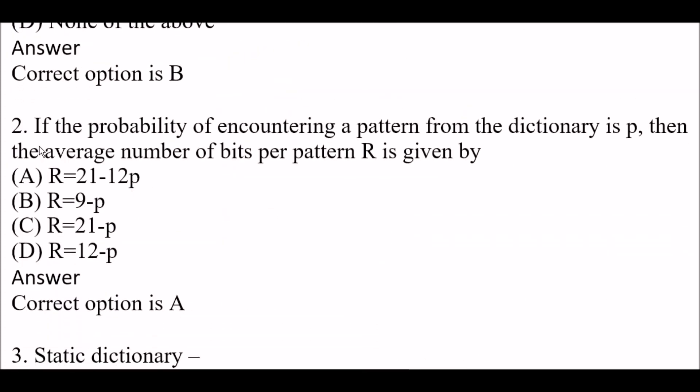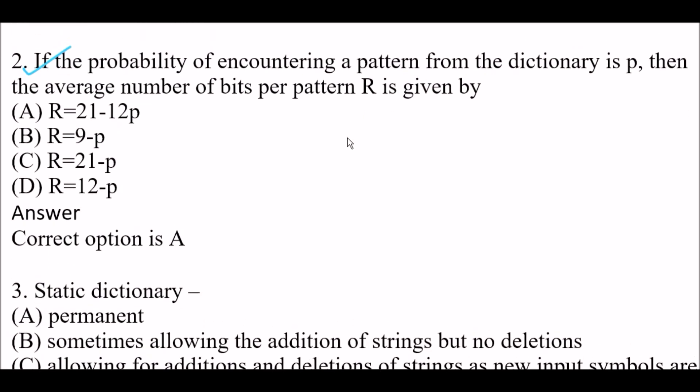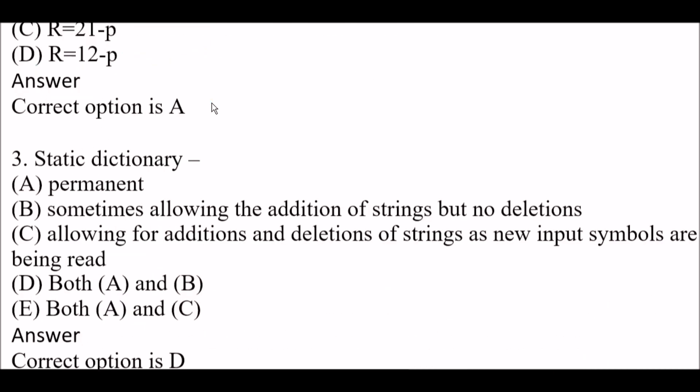Next question: If the probability of encountering a pattern from the dictionary is p, then the average number of bits per pattern r is given by — Option A: r = 21 − 12p. Option B: r = 9 − 4. Option C: r = 21 − p. Option D: r = 12 − p. The right answer is Option A: r = 21 − 12p.